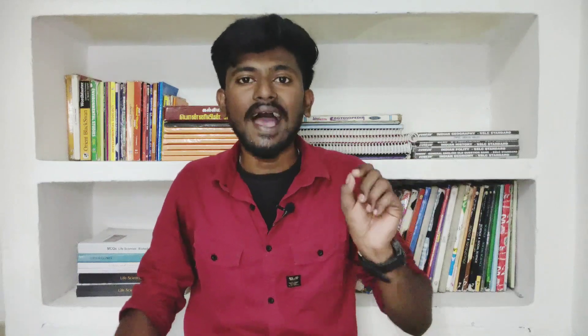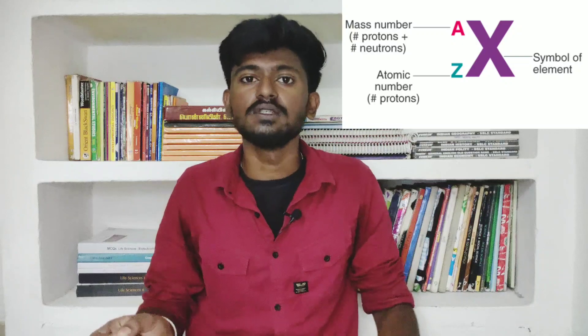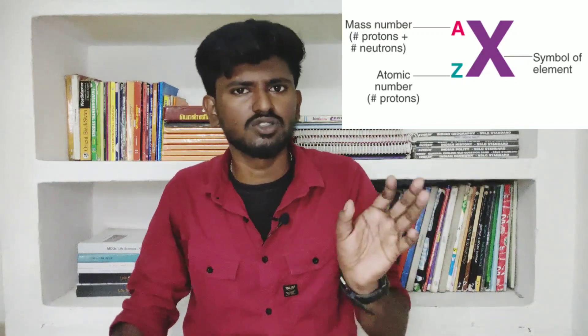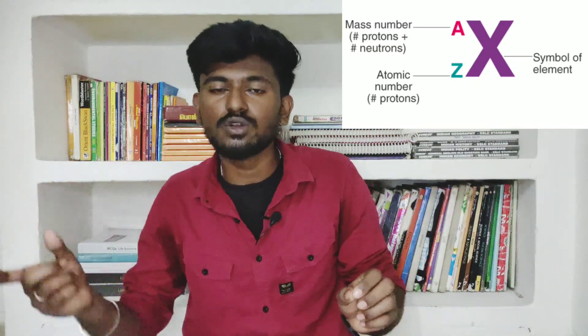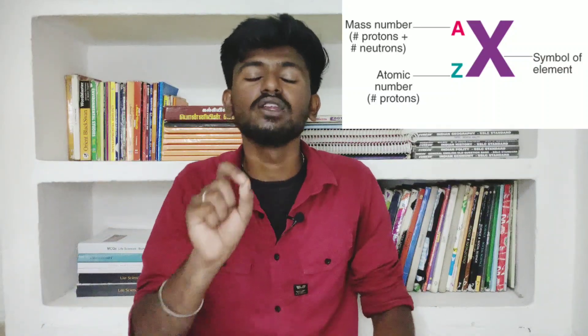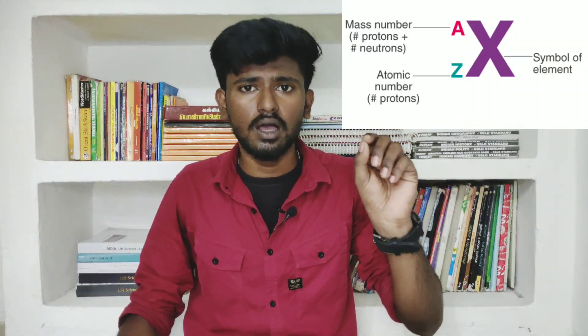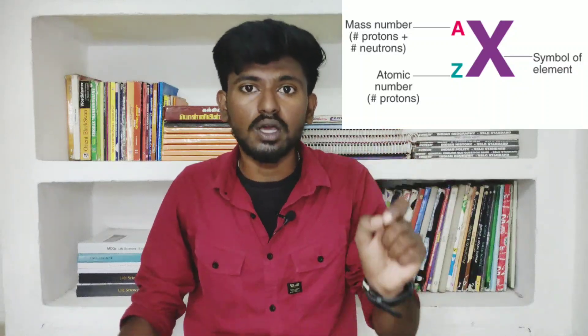What is the atomic number? What is the subscript? Atomic number is the number of protons. Mass number is the total number of protons and neutrons. So atomic number equals the number of protons, and mass number equals the total number of protons plus neutrons.